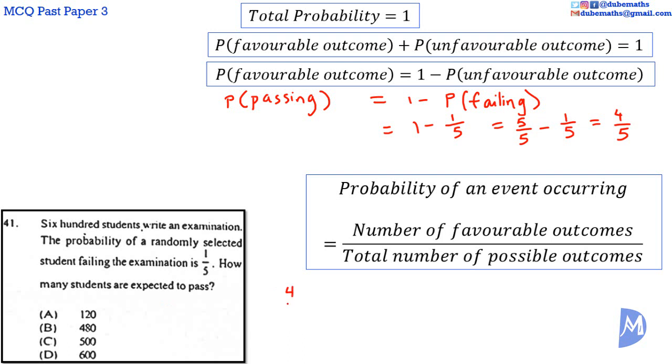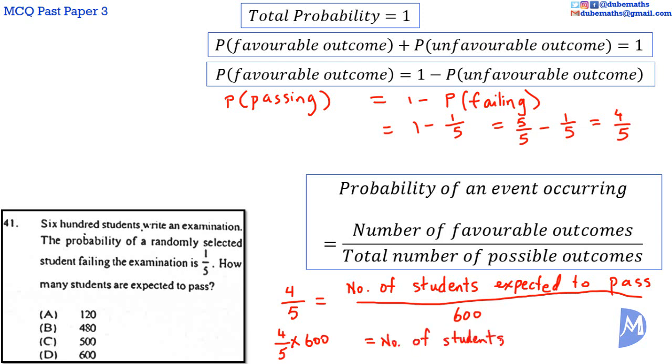That is, 4 fifth is equal to the number of students expected to pass over the total number of students, 600. Multiplying by 600 leaves the number of students expected to pass alone on the right hand side.